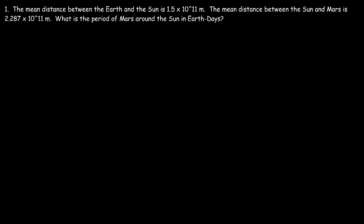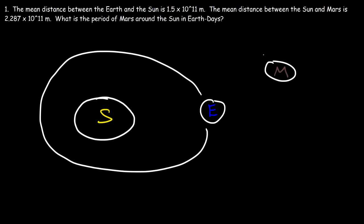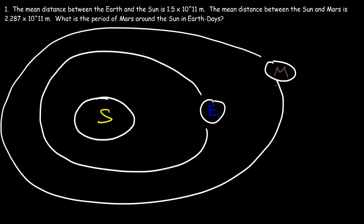Now let's work on practice problems. The mean distance between the Earth and the Sun is 1.5×10¹¹ meters, and the mean distance between the Sun and Mars is 2.287×10¹¹ meters. What is the period of Mars around the Sun in Earth days? The Earth orbits in an inner orbit and Mars in an outer orbit. It takes Earth 365 days to orbit the Sun.